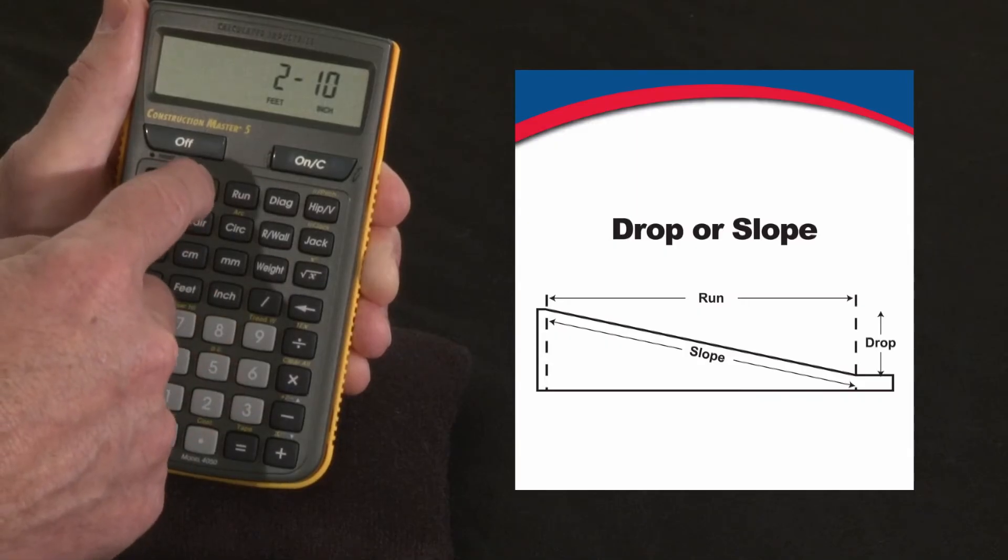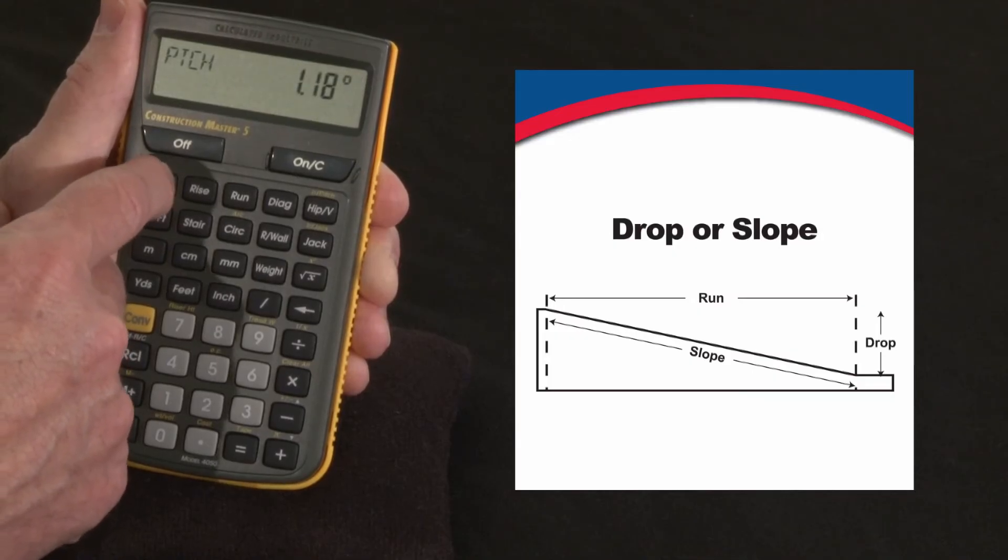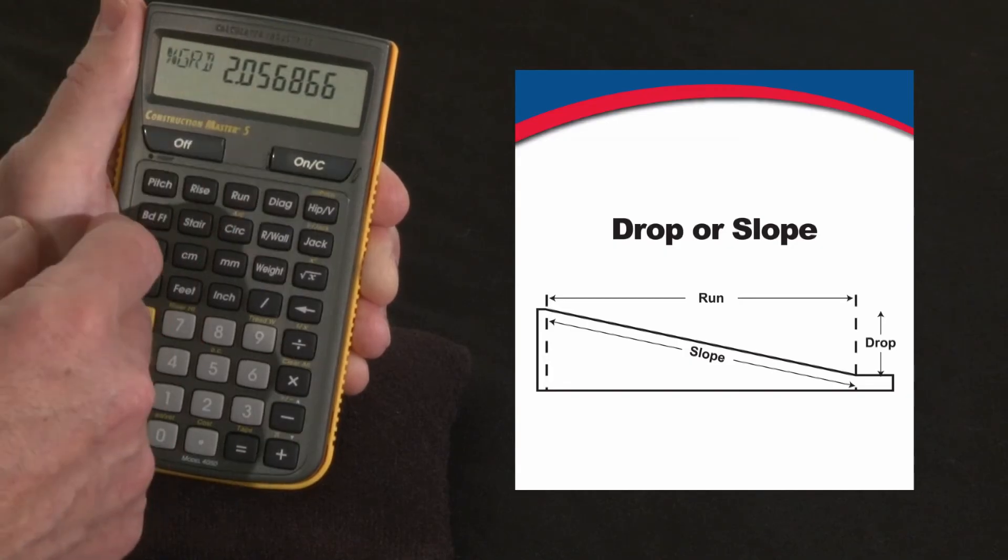It's really a drop, but I enter that as rise. And now I calculate what that slope is. Well, a quarter inch per foot is what it comes out to be, which is good. Another way to look at that is 1.18 degrees or basically a 2 percent grade.